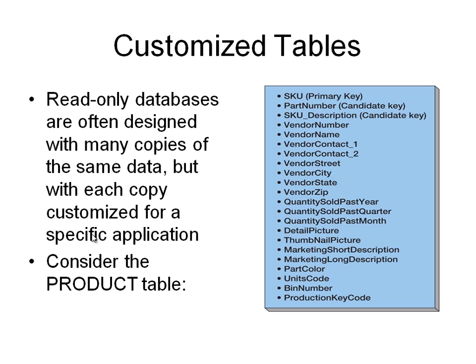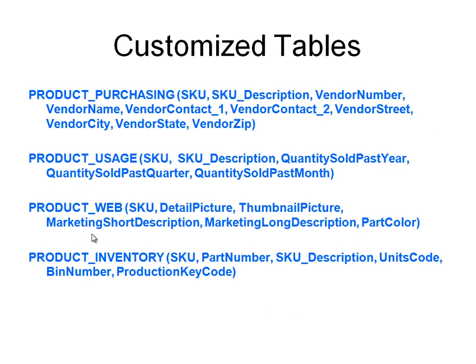Read-only databases are often designed with many copies of the same data, with each copy customized for a specific application. For example, a product table has information about the product itself such as SKU number and description, vendor information, and quantity and cost. We can customize this information to be included in different tables. Examples of customized product tables include product purchasing, product usage, product web, and product inventory. Each table is customized to include the information needed, and although some information overlaps, they are grouped in a way that is useful for the company, sometimes based on different departments.